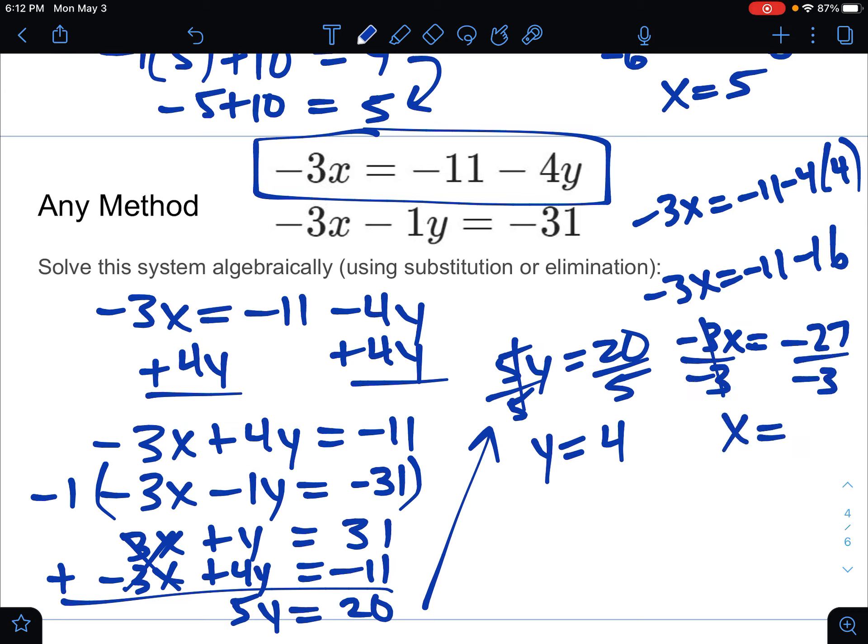And we get x equals 9. So our coordinate is always x, then y, 9, 4. Even though we found the y first, it's still always x, then y. That's how we use this elimination there to solve the system algebraically. Thank you.